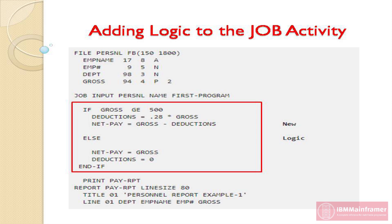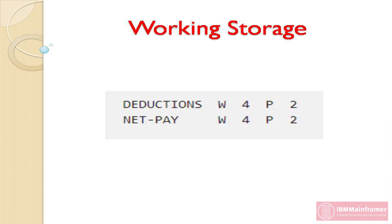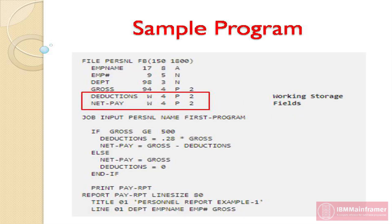There are several details we still need to take care of. We need a place to store the results for our two new variables: deductions and net pay. They can be stored in a place known as working storage. Unlike many other languages, EasyTrieve makes defining working storage fields easy. You can place them in the library section of your program or in the activity section before the logic that requires them. To define a working storage field, you use the same type of attributes used to describe other fields in the library section. However, you use the letter W to replace the numeric value that normally describes the start location. Let's see our two working storage fields, deductions and net pay. W tells this is a working storage field — it is 4 characters long, in packed decimal format with 2 decimal places. We place these fields in the library section of our sample program, where they are more easily seen than if they were placed in the activity section.